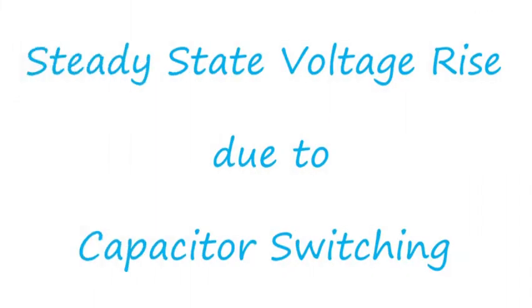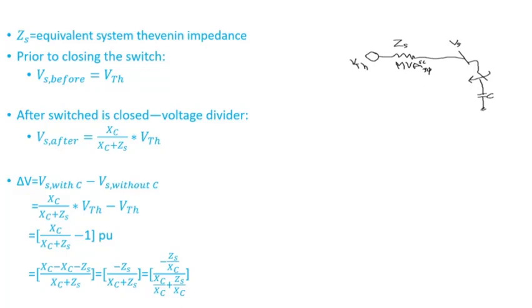Hello and welcome to Engineering Simple. In this video I'll talk about steady-state voltage rise which is caused by capacitor bank switching. At the bus where a capacitor bank is connected, when you switch it into the system there will be a voltage bump or voltage rise, and that can be a problem — it could cause flicker issues. IEEE has some requirements for how much that voltage rise should be: under normal steady-state operation it should not exceed three percent, and under contingency it should be less than five percent.